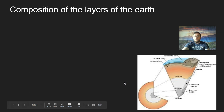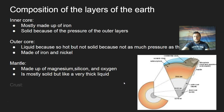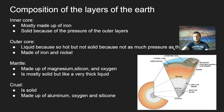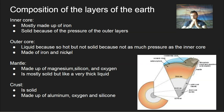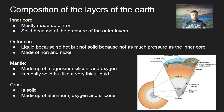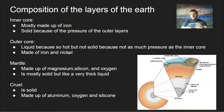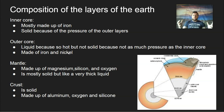On the inside you have the core. The reason we split them into different parts is because they have different composition. The core is made up of mostly iron and nickel — denser elements — which, when the Earth formed as a ball of molten lava, sank to the bottom. The inner core is solid because it's under a lot of pressure, but the outer core is still hot enough and not under enough pressure to be melted.